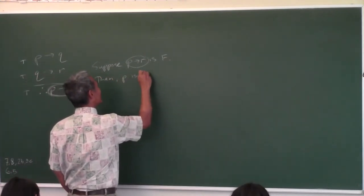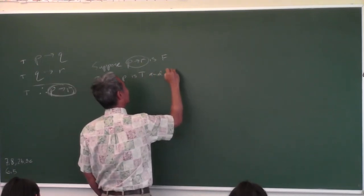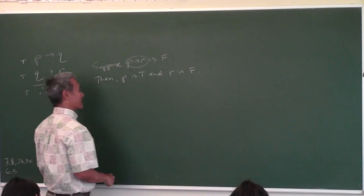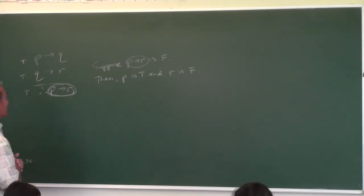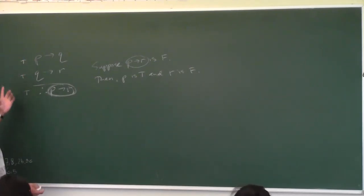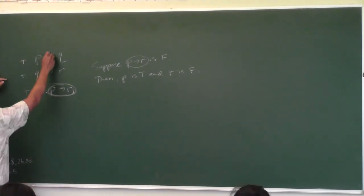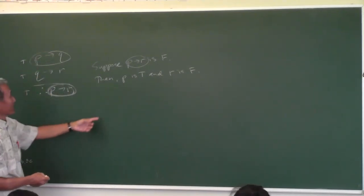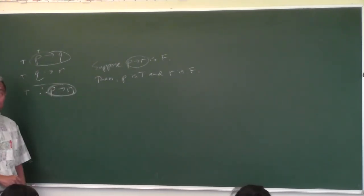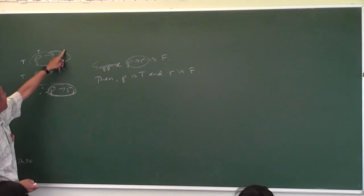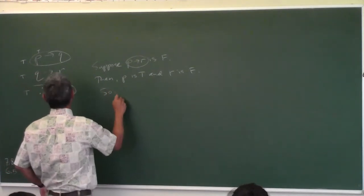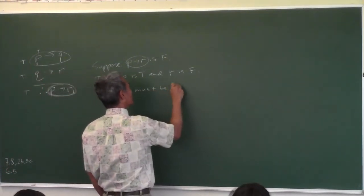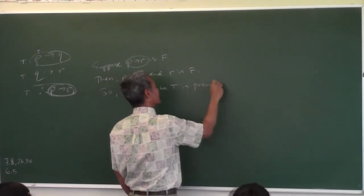Then P is true and R is false. Now you take that into here until you get some kind of contradiction. You want to work with premise one or premise two? Premise one. If this entire statement is true — which is a conditional statement — and P is true, then what can you say about Q? True. It has to be true, because if Q was false, wouldn't this whole statement be false because it's conditional? So Q must be true in premise number one.